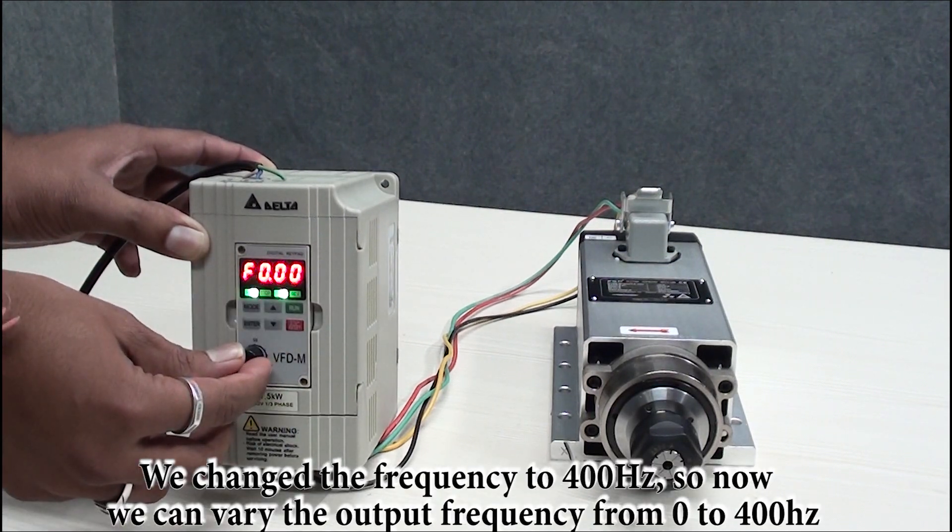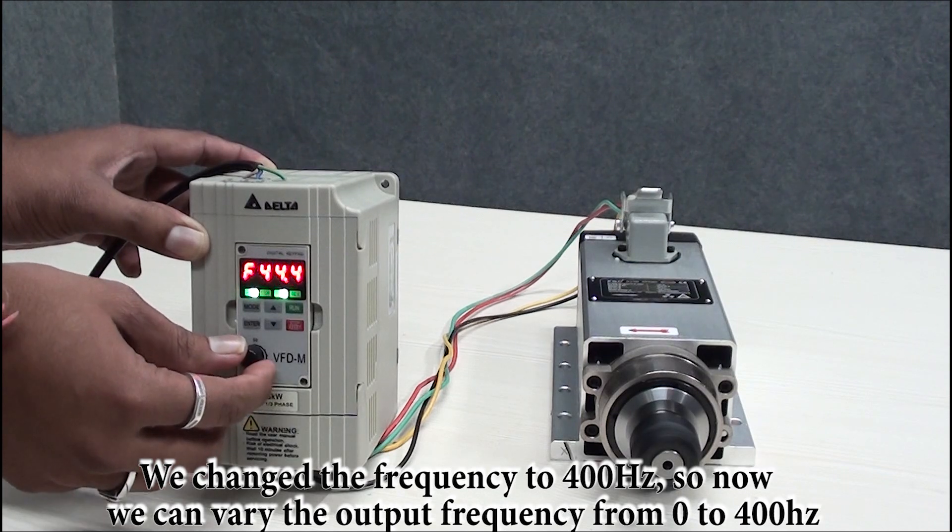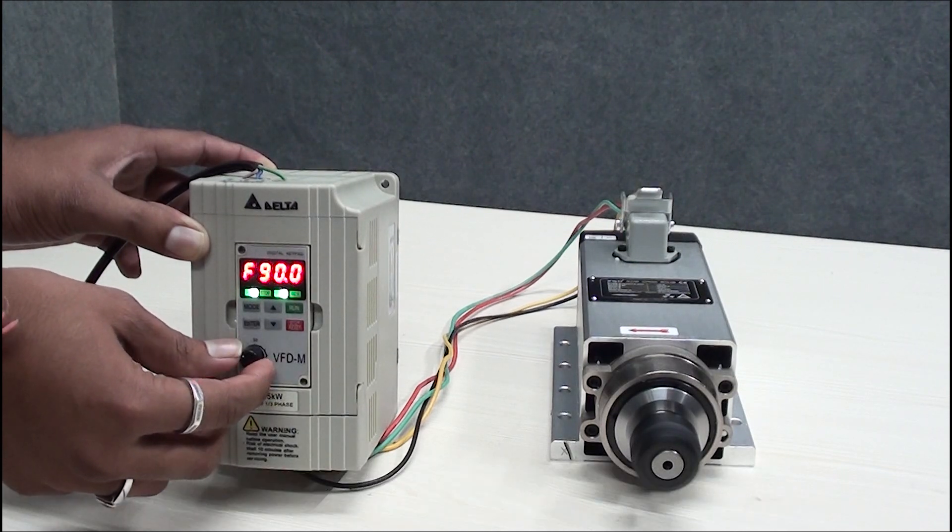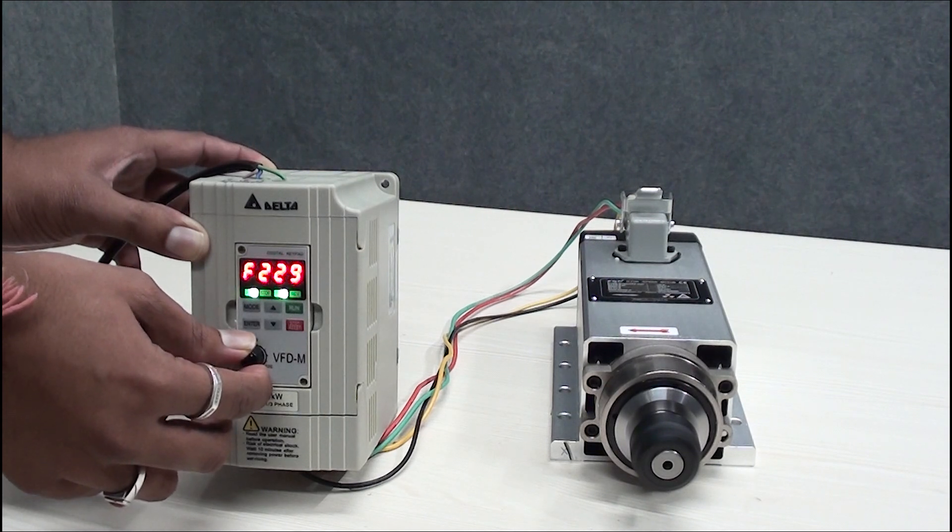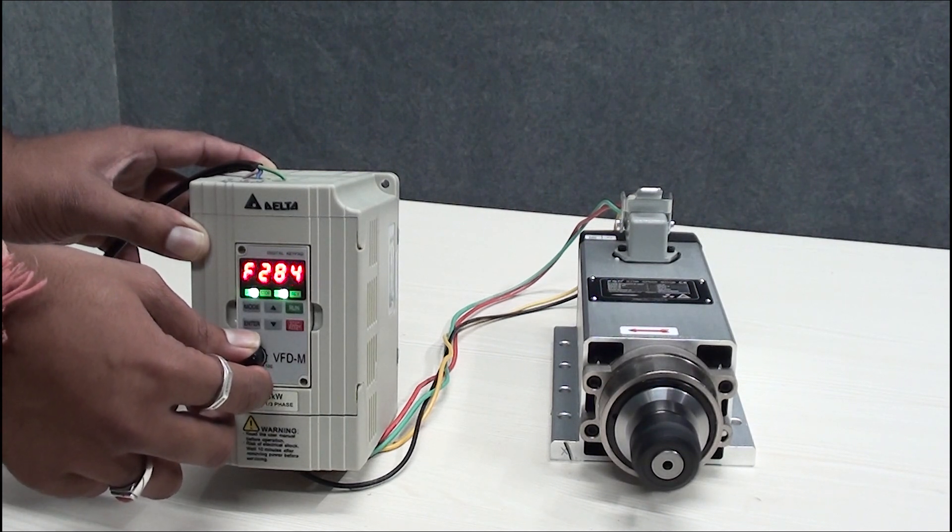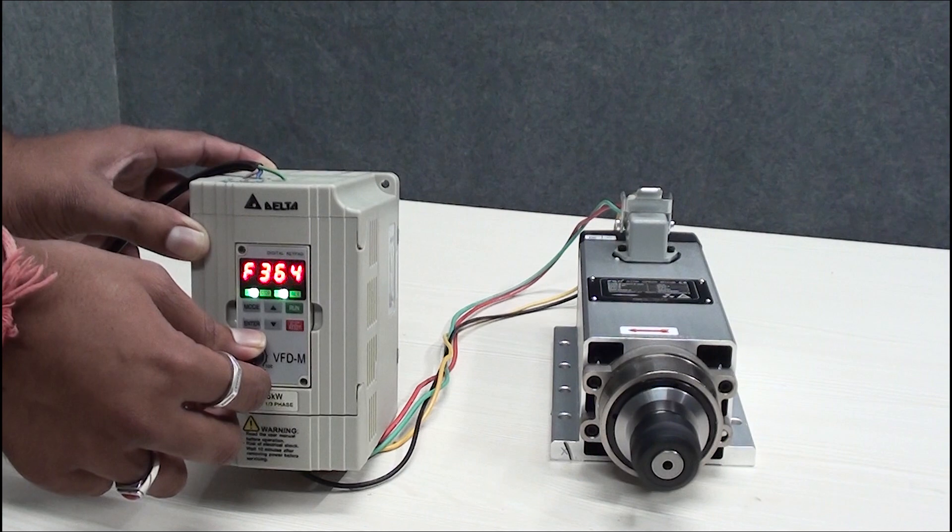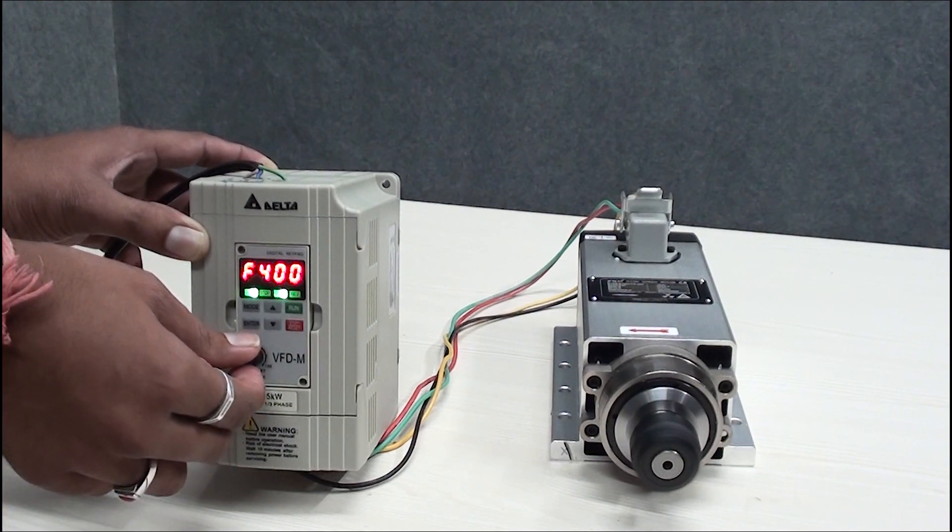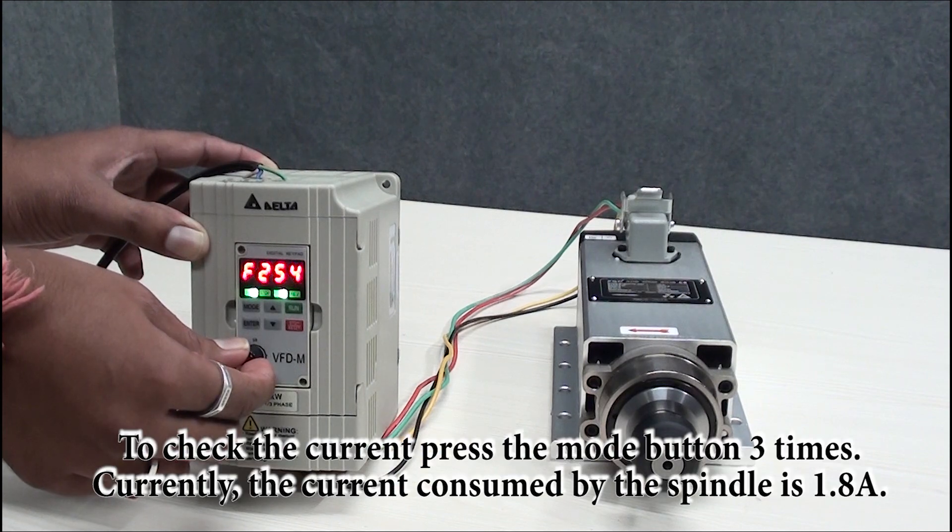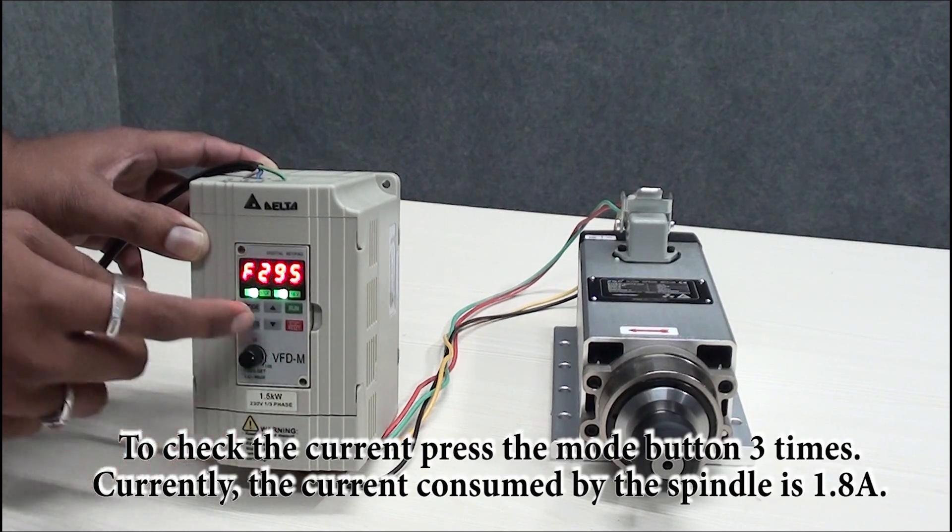Again this main window comes. As we decrease, this is zero frequency. As we press run button and as we vary the potentiometer, the spindle starts to operate from zero to maximum RPM.